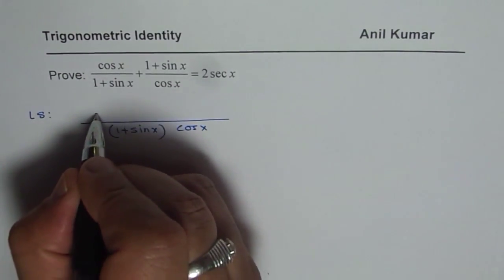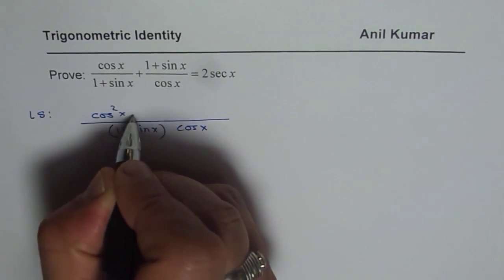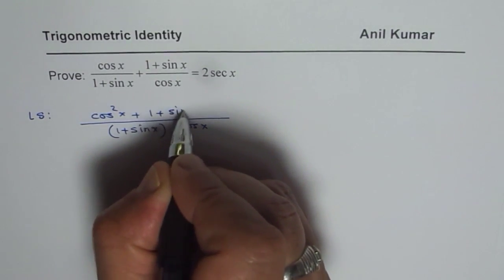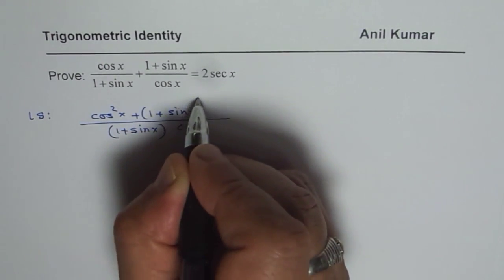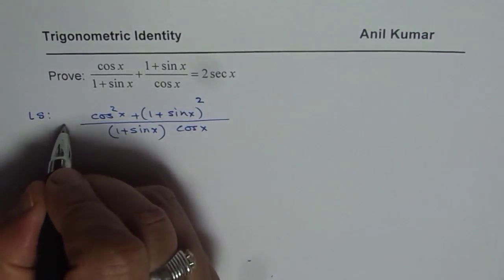So we will cross multiply. We get cos squared x plus 1 plus sin x times 1 plus sin x, or 1 plus sin x whole squared. So that is the left side.